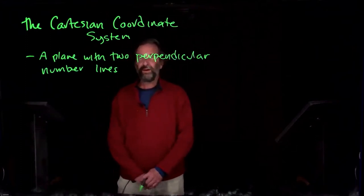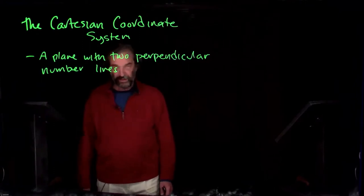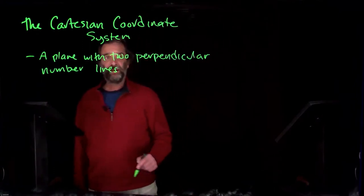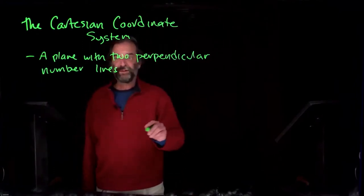Let's talk about the Cartesian coordinate system. A Cartesian coordinate system is a plane with two perpendicular number lines.